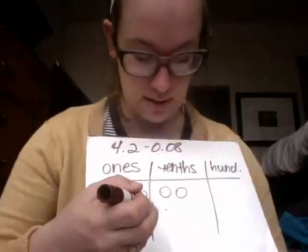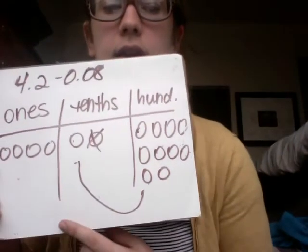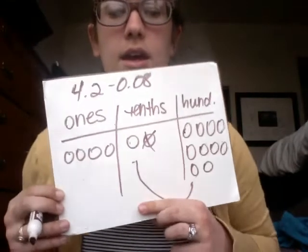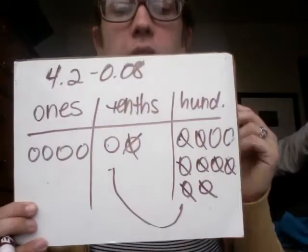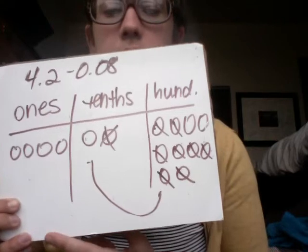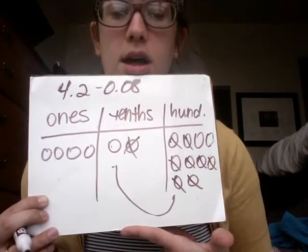I'm going to have to rename one of my tenths — to ten hundredths. Now I still have four in my ones place. Now I only have one in my tenths place, and I have ten hundredths. I'm subtracting eight hundredths, so let me mark out eight of them. I have four ones, one tenth, and two hundredths left. So my answer would be 4.12.